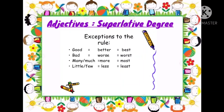Now let's look at the exceptions to this rule. 'Good' becomes 'better' in comparative degree and 'best' in superlative degree. 'Bad' becomes 'worse' in comparative degree and 'worst' in superlative degree. 'Many' or 'much' becomes 'more' in comparative and 'most' in superlative. 'Little' or 'few' becomes 'less' in comparative and 'least' in superlative degree. This is how we use these adjectives across positive, comparative, and superlative degrees.